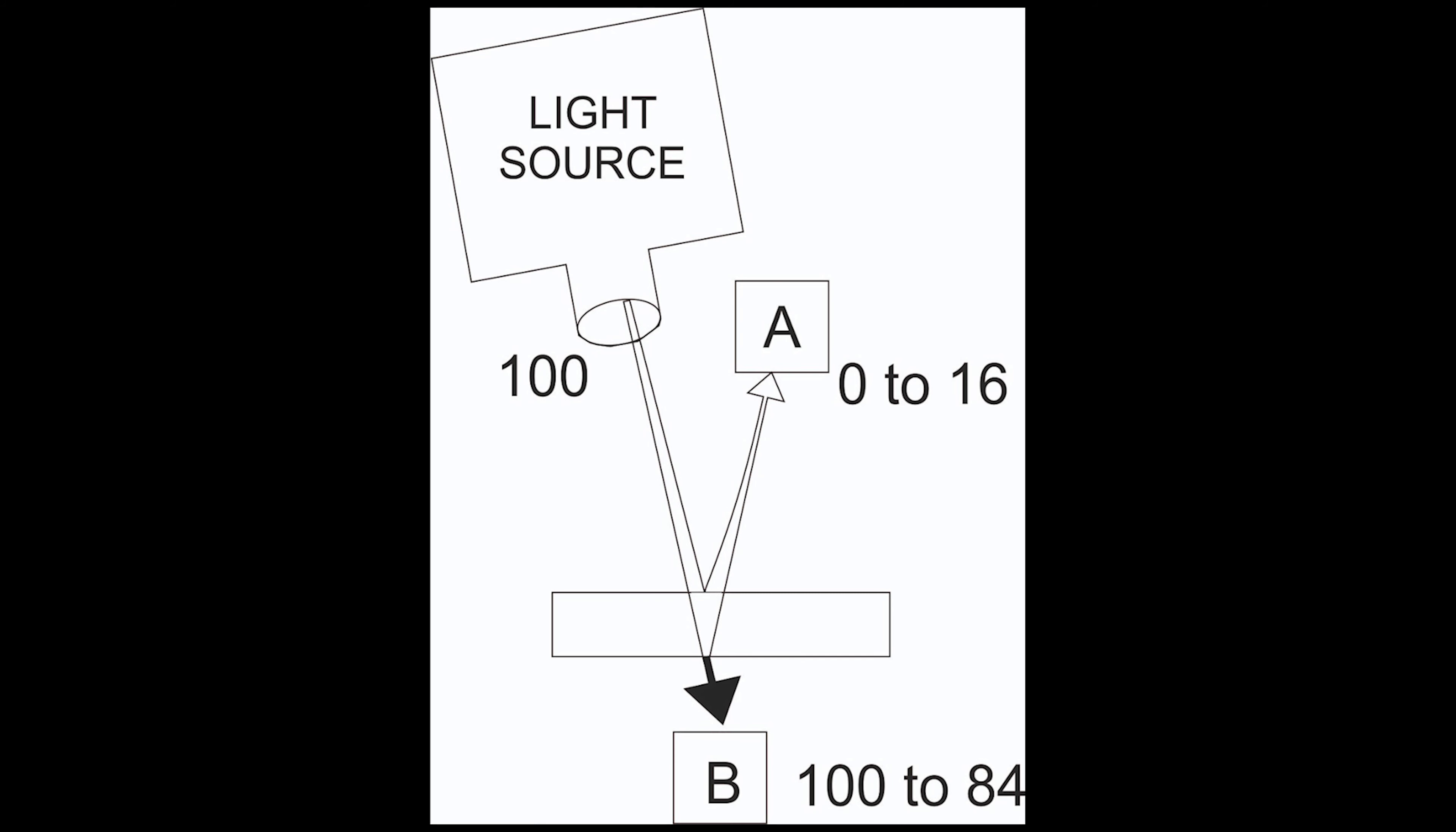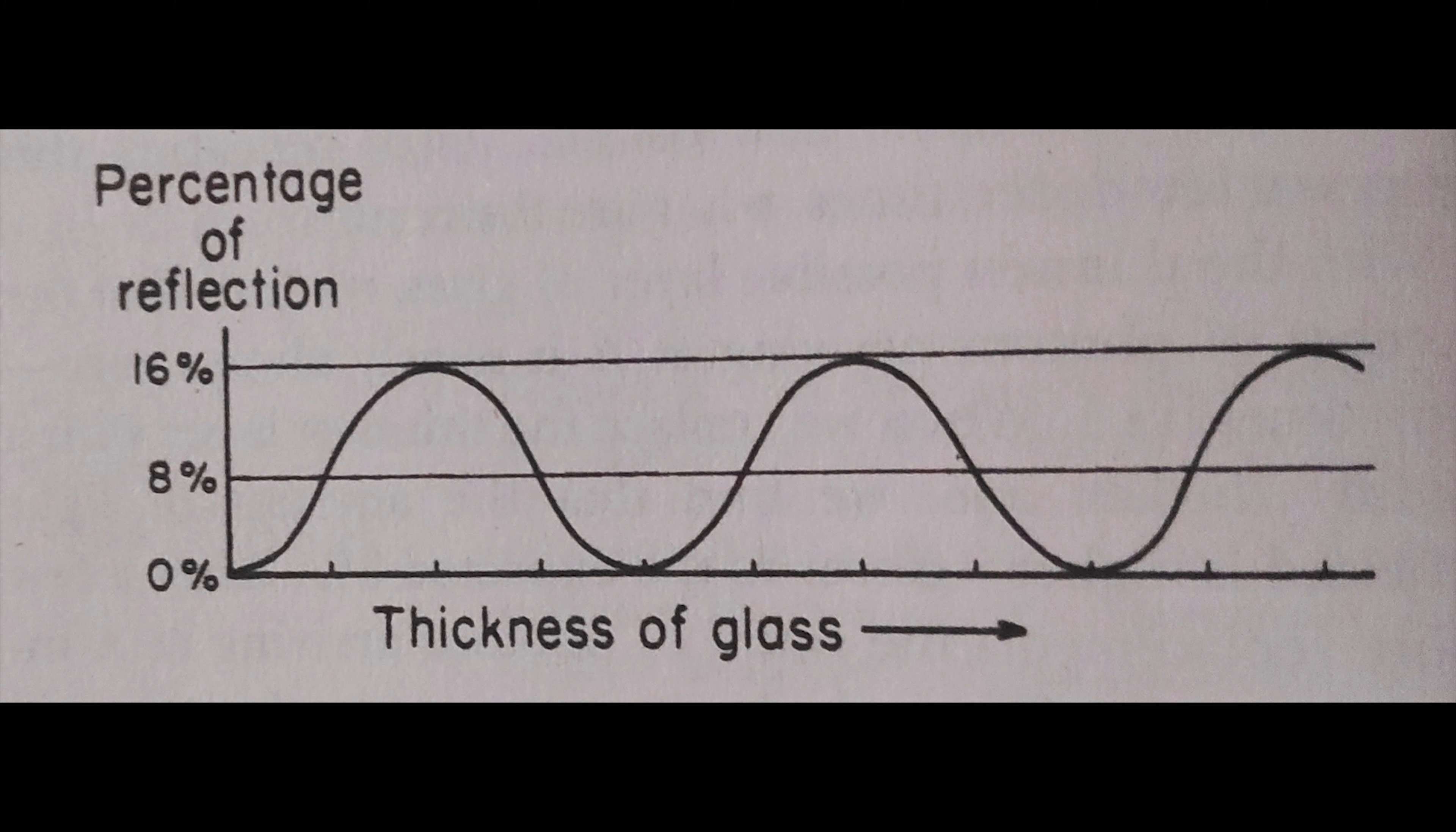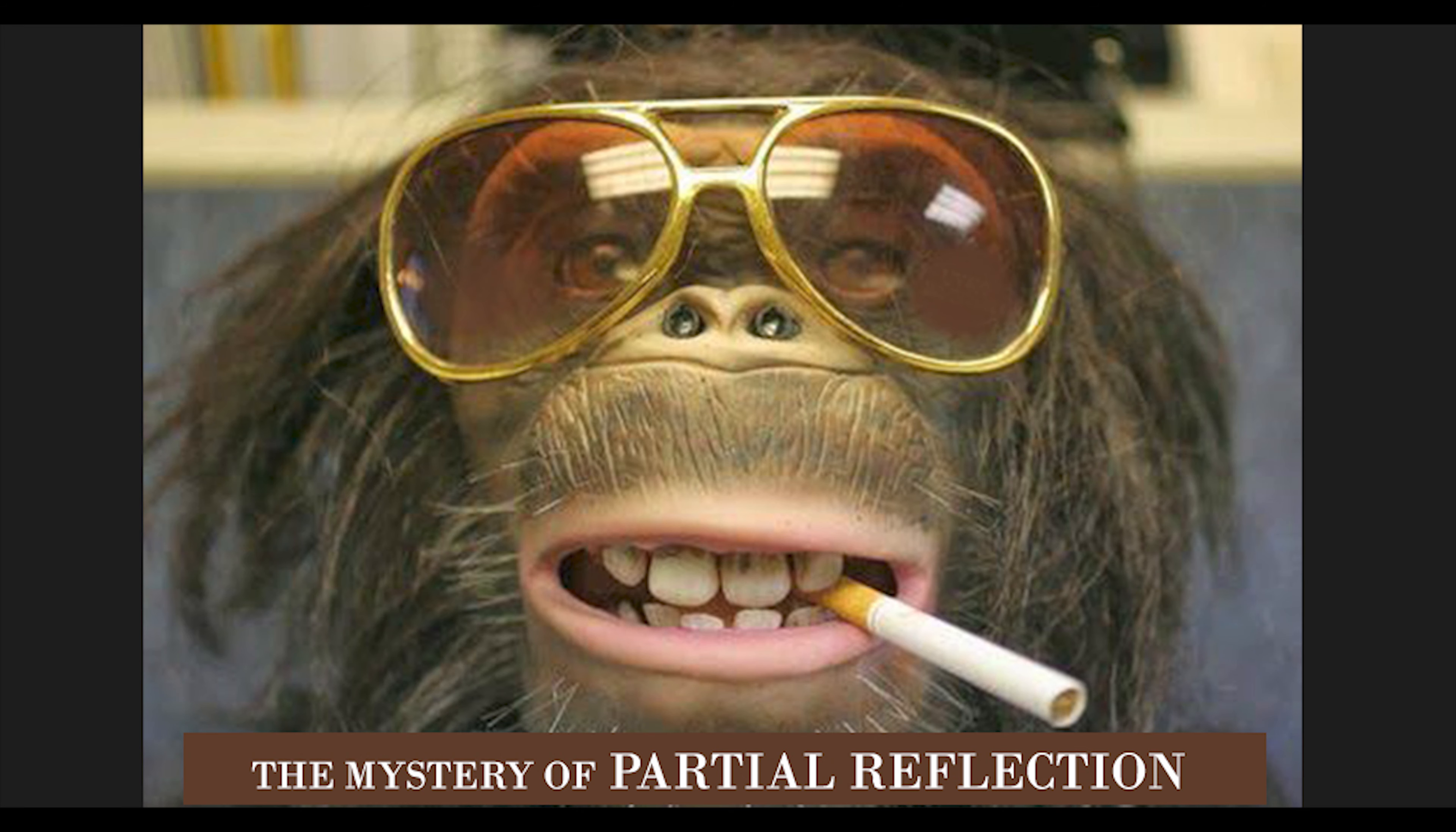When we draw these arrows as we increase the thickness of the glass slab, we will get the probability of the event of reflection happening or not. These are the results we get when we draw and square the final arrow. When this is represented graphically, we get a recurring wave. I have explained this phenomenon of partial reflection in a separate video.